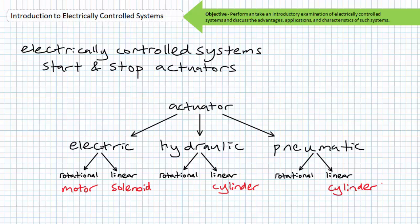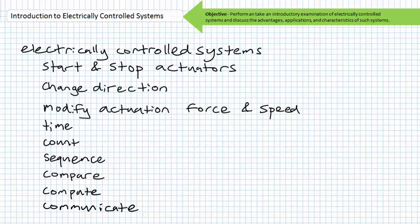Numerous examples of actuators exist, and despite their differences of input energy or form of mechanical movement, they can all be electrically controlled. A magnetic contactor can start or stop a motor, and a solenoid-operated directional control valve can stop or start a hydraulic cylinder. In addition to starting and stopping actuators, electrically controlled systems can change direction and modify operating characteristics of actuators, such as varying the rotational speed and torque of an electric motor and varying the extension or retraction force or speed of a hydraulic cylinder.